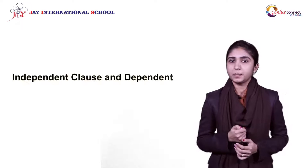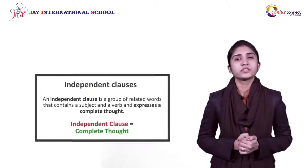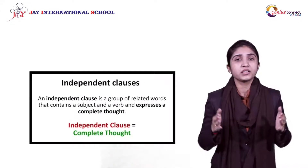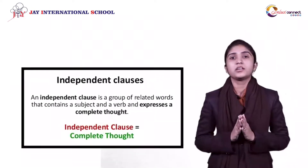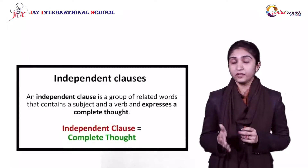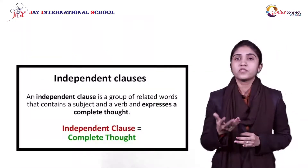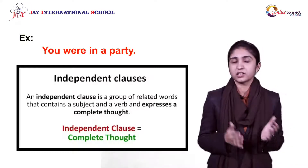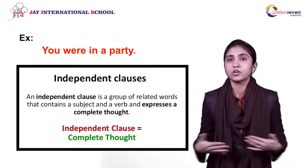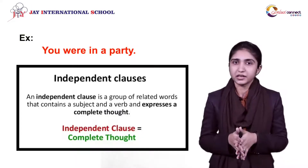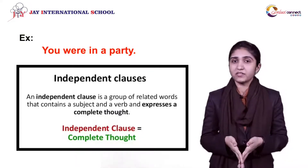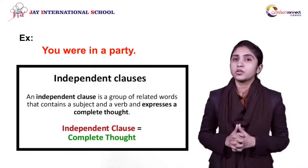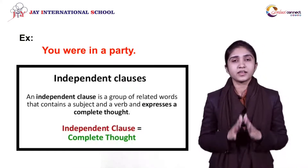Now this brings me to the types of clauses. There are two main types: independent and dependent. An independent clause is a complete sentence with a full meaning — it doesn't need any other word to fulfill or support its meaning. For example, 'You were in a party.' There is a subject, a verb, and a complete meaning, making it a sensible sentence. That is why we call it an independent clause — it can stand on its own.